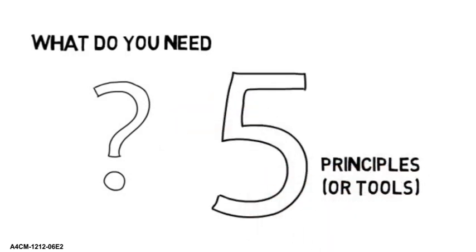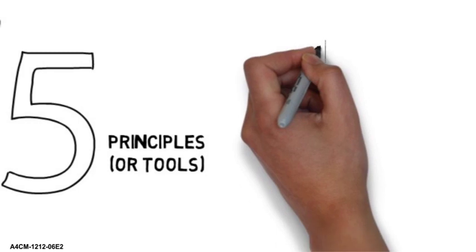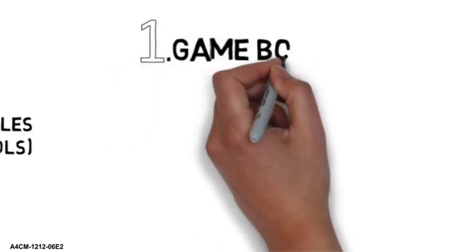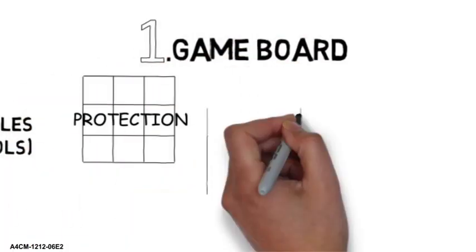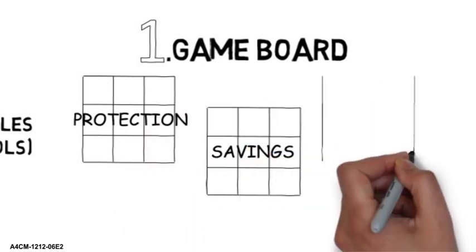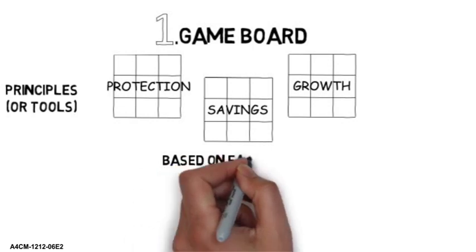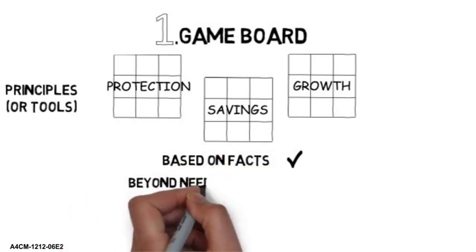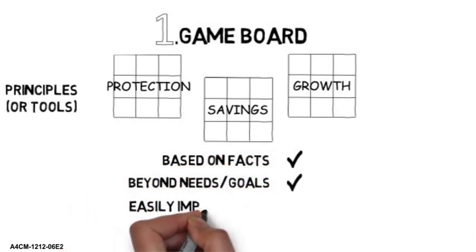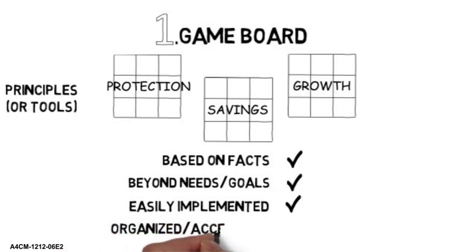Let's go through them one at a time. The first thing you'll need is a game board to give order to your financial world. We like using a game board that focuses on protection, savings, and growth. This will help your investments and decisions to be coordinated and integrated based on facts designed beyond needs and goals and will be easily implemented, organized, and accessible.